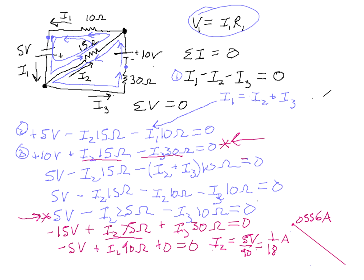We can now plug that into this equation to solve for I3. When you do that, you will get that I3 is equal to 0.361 amps. Then use this equation. I1 is just I2 plus I3. So I1 turns out to be 0.417 amps.